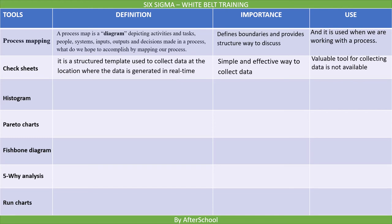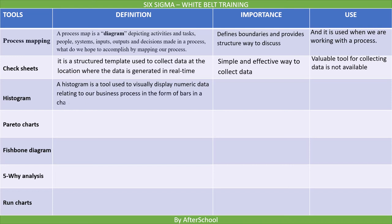The third tool is Histogram. A Histogram is a tool used to visually display numeric data relating to our business process in the form of bars in a chart. The Histogram is particularly useful when you have a large data set to analyze. It is used when we want to communicate data easily.